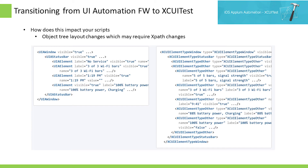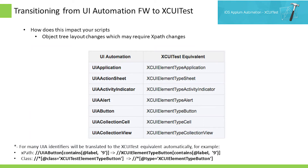Previously, UI Automation XPath identifiers were used. With XCUI Test, a new tree is introduced and with it new identifiers. For the most part, the translation can be done automatically on the server side, transparent to you — for example, XPath and class names.